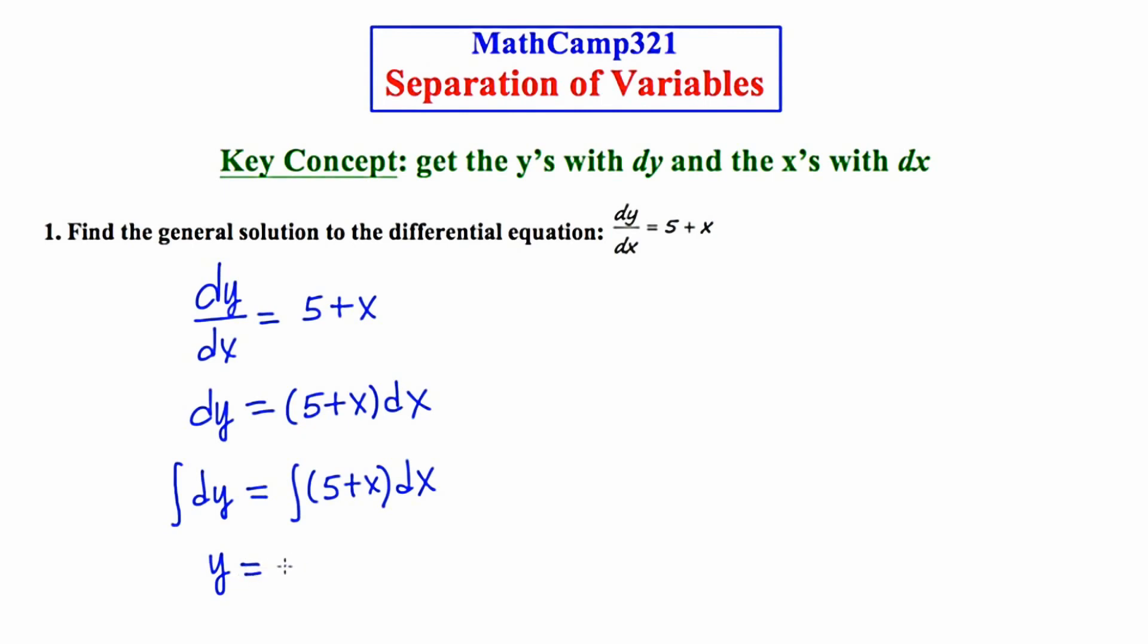And moving to the right-hand side, when I integrate 5 with respect to x, I get 5x, and then one-half x squared. And let's not forget the arbitrary constant plus c. So this right here is the general solution to the differential equation dy/dx equals 5 plus x.